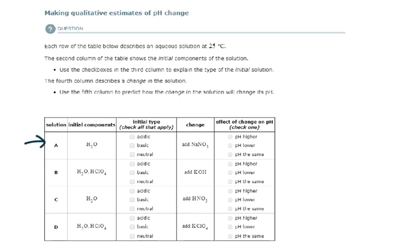So let's look at solution A first. Its initial component is water which would make it a neutral solution initially. Now we add this solute sodium nitrate.